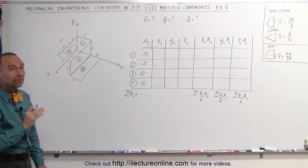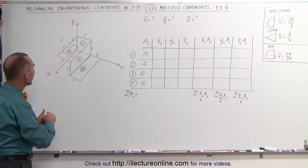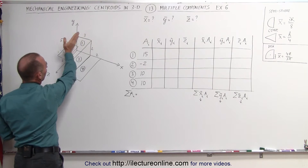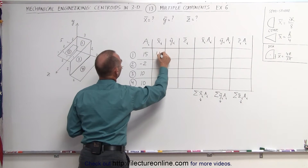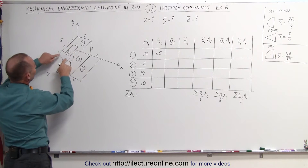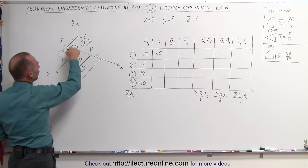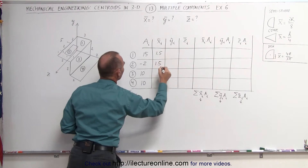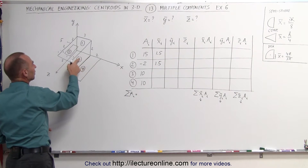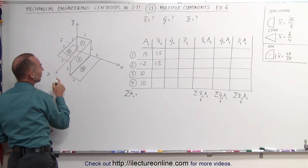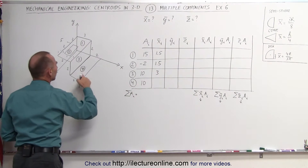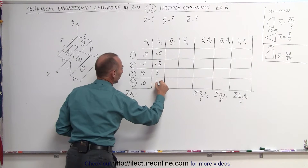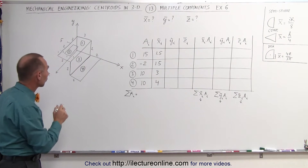Now we need to find the x, y, and z components of the centroids of each individual area. For the horizontal piece at the top, in the x-direction that would be halfway across — that would be 1.5. For the hole, it's also in the middle — notice it's one unit, one unit, one unit — so the centroid in the x-direction for the missing piece is also 1.5. For the vertical piece, the x-centroid would be exactly three units away from the z-axis. And for the horizontal piece, it's 3 plus halfway across — that would be 4. So now we've established the x-coordinates of the centroids of the four pieces.